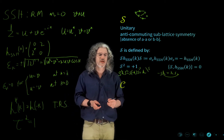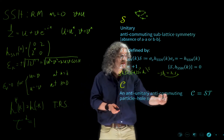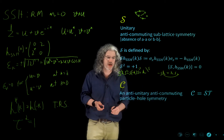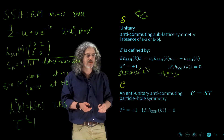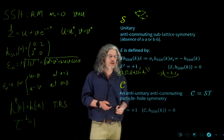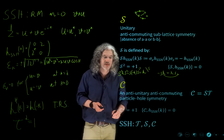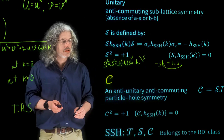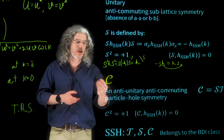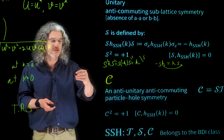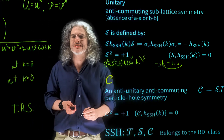There is another symmetry in the SSH model: the particle-hole symmetry. This is an anti-unitary, anti-commuting symmetry. C is simply defined by S times tau — the sub-lattice times the time reversal — giving the particle-hole symmetry. You can check, using the similar treatment, that C squared equals 1 and it is an anti-commuting operator. To summarize, the SSH model has three symmetries: tau, S, and C. A system with all three symmetries and tau squared equals S squared equals C squared equals 1 is known as the BDI class.